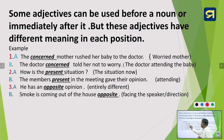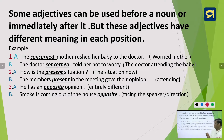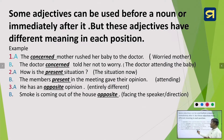Similarly, the second example: 'How is the present situation?' and 'The members present in the meeting gave their opinion.' Two uses of the same adjective 'present' — before the noun and after the noun — with different meanings. In the first, 'present situation' means the current situation. In the second, 'members present' refers to the people who attended the meeting.